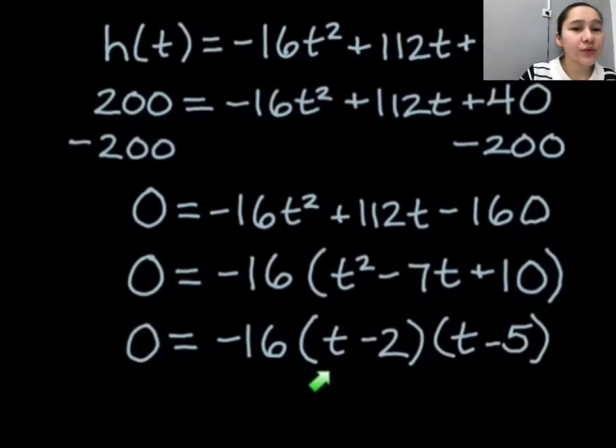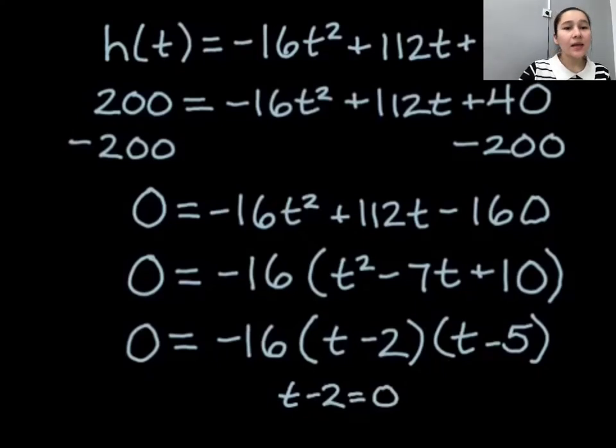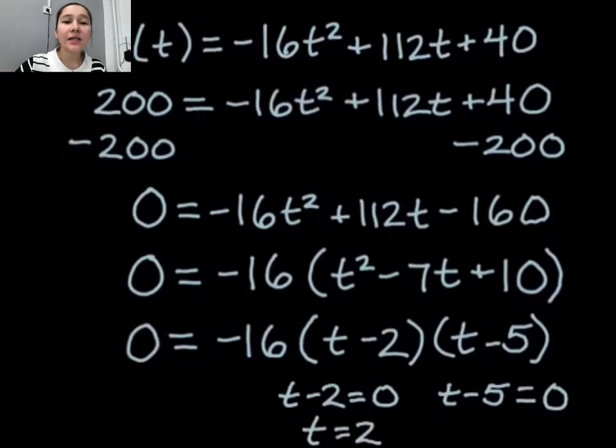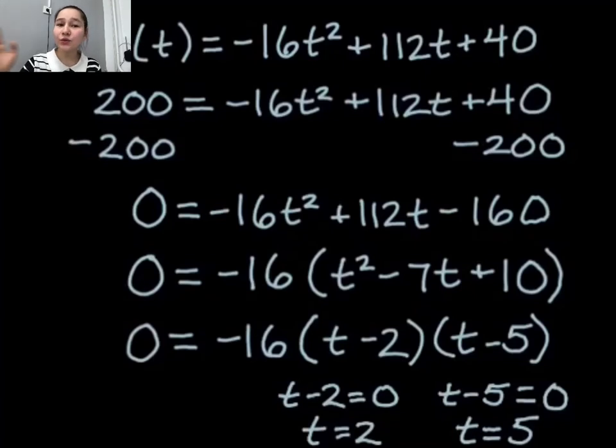But our next one, t minus 2, that potentially could equal zero. So we'll do that, we have t minus 2 equals zero. And our next one, t minus 5, that could also equal zero. If either of those are the case, the whole thing equals zero. So this first one, t minus 2 equals zero when t equals 2, and this one equals zero when t equals 5.